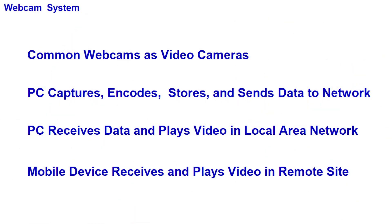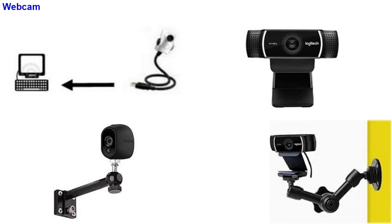The webcam-based system uses common webcams as the video cameras. A PC is used to capture, compress, store, and transmit data to a PC in the local area network. Usually another PC is used to receive the data from the network and play out the video. The PC also sends the data to the Internet for a mobile device to play out the video at a remote site.